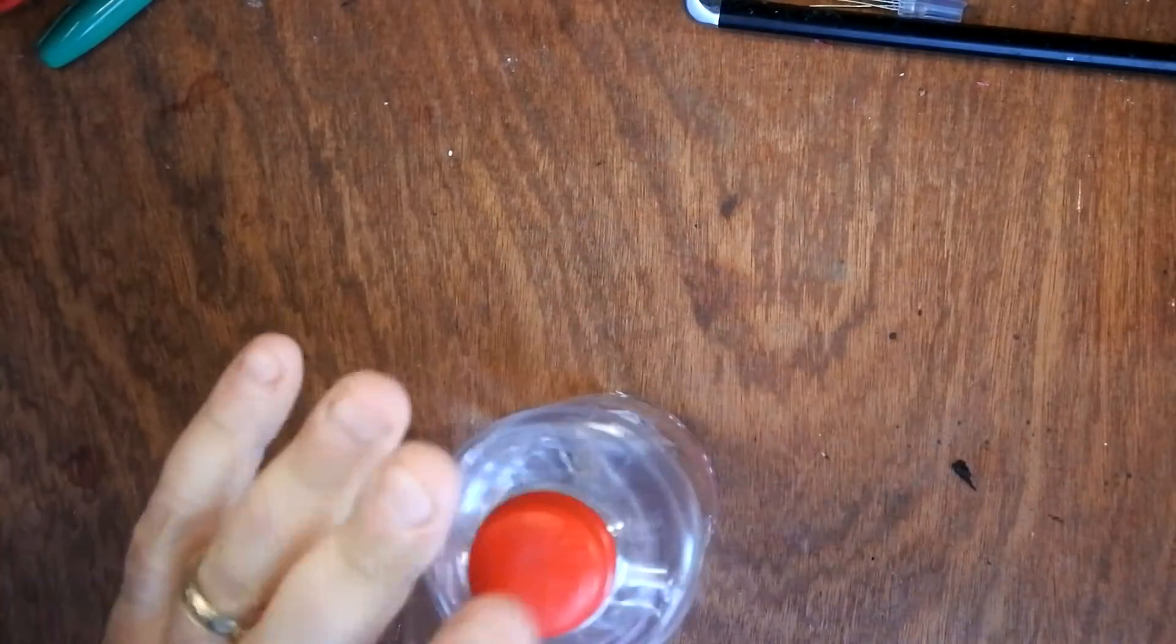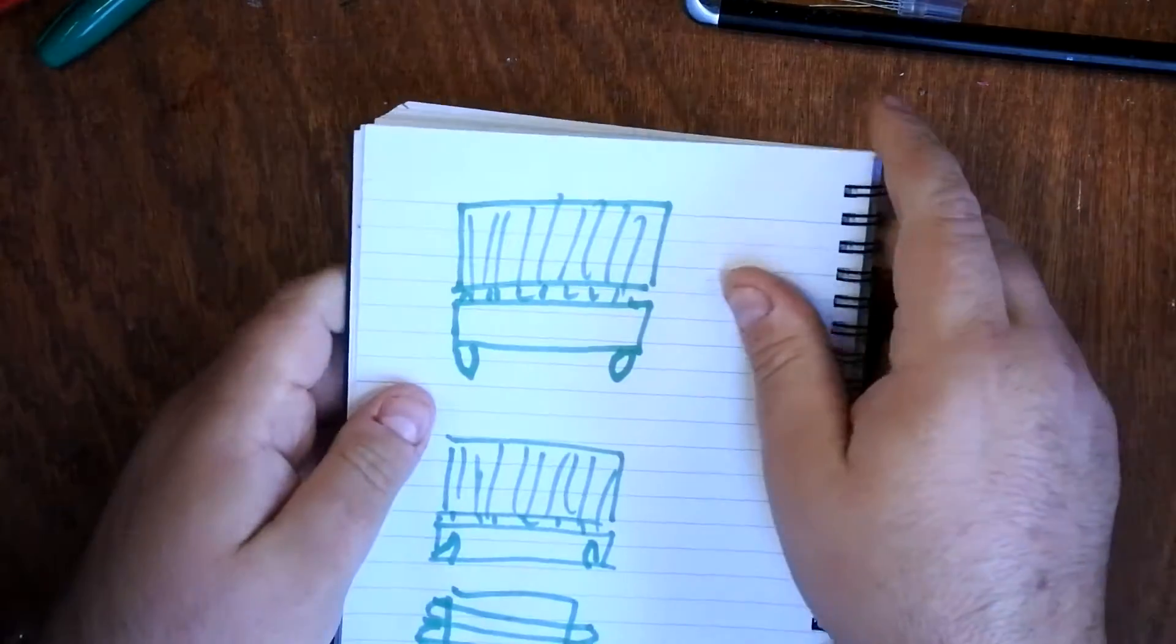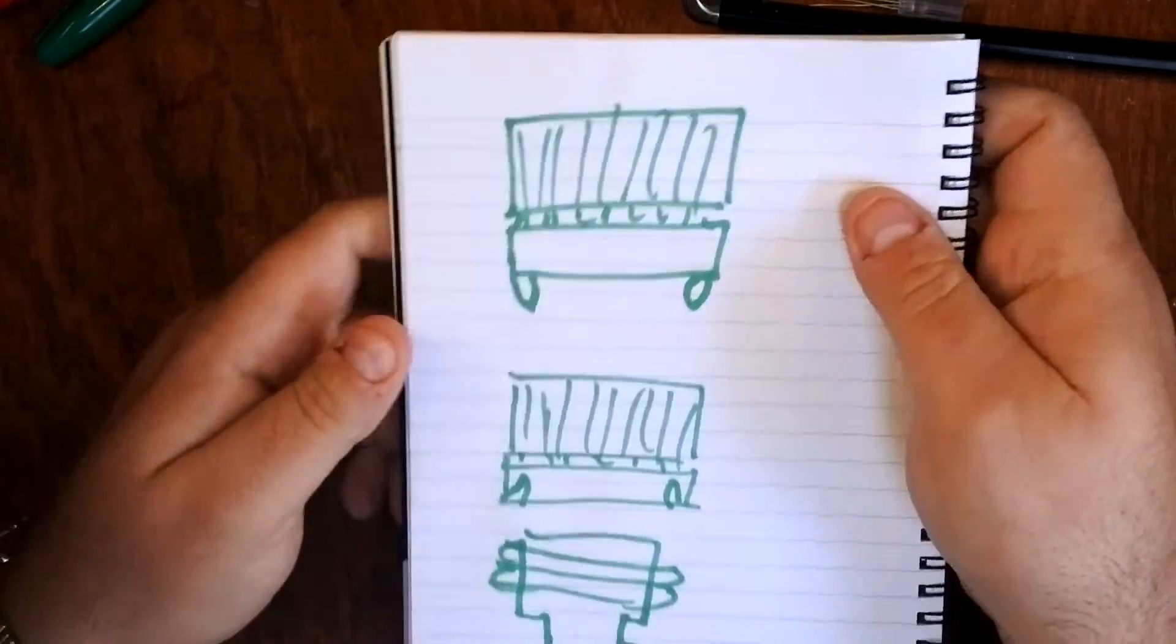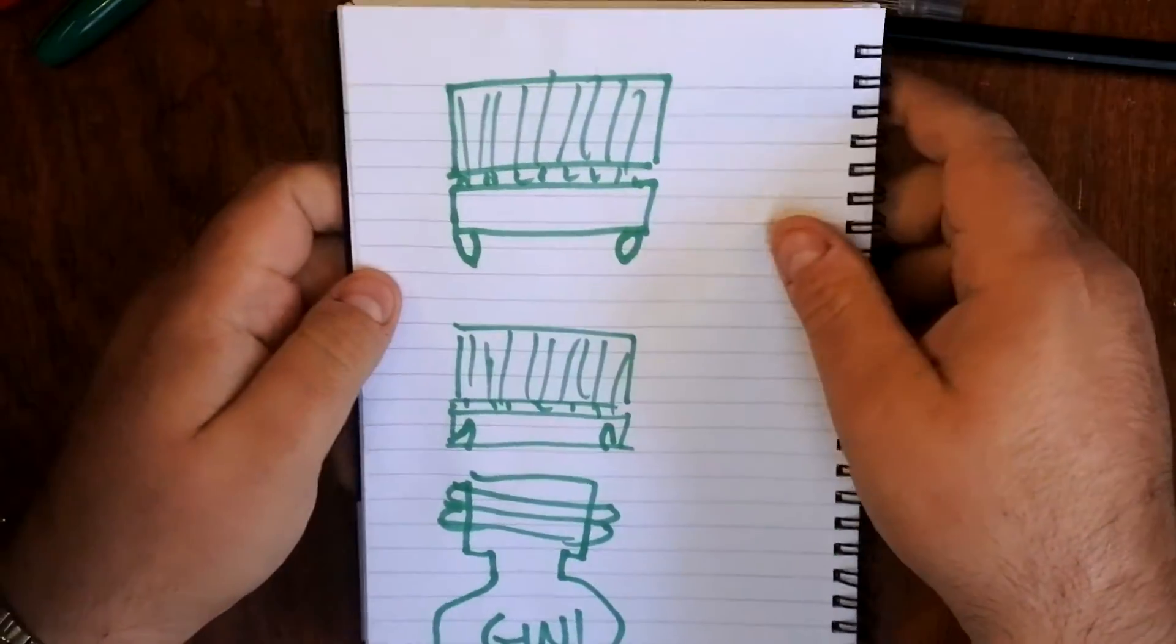So these bottle tops are a classic example of something that's developed for manufacturing efficiency. Here is a very bad diagram which I've been working on.